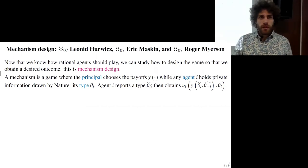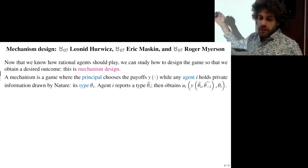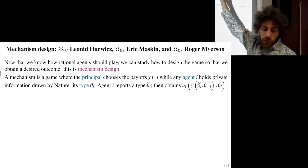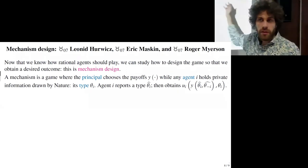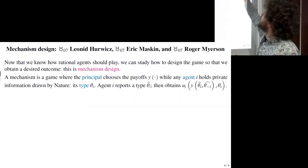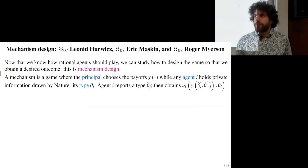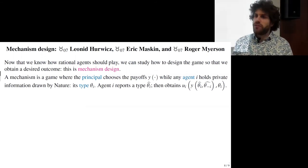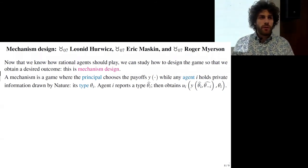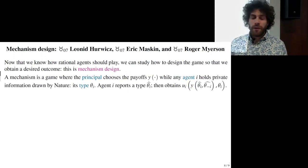The agent — or there can be several agents — holds private information drawn by nature. There is a distribution of possible information they can have, called the type. An example of type that is private information (the agent knows it but not the principal) is their ability to work, their preferences, or the quality of a good they are selling. In the game, the agent reports their type θ̂ and obtains a payoff depending on this report and the reports of others, given their true type θ.